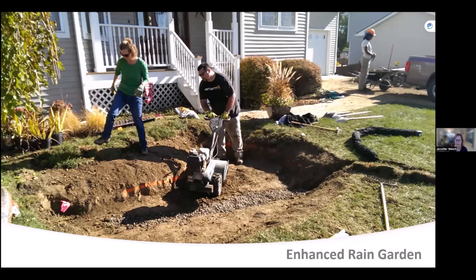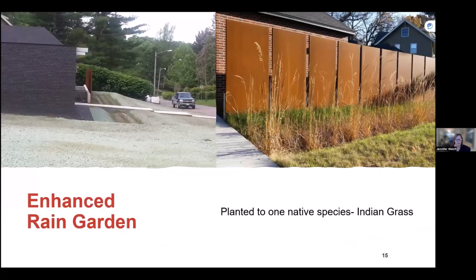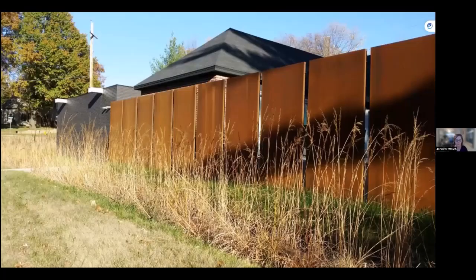The enhanced rain garden's tile drain provides a way to drain the bathtub if it can't take all the water. You're removing some soil to create the bathtub and then refilling with the soil material on top. Here's an example of an enhanced rain garden being established — it was planted to one native species, Indian grass, because the homeowner liked the way it played off their metal screen.